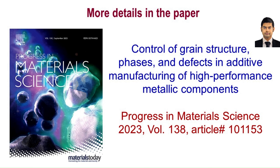More details on the control of microstructure can be found in the review paper, 'Control of Grain Structure, Phases, and Defects in Additive Manufacturing of High-Performance Metallic Components.' The paper can be downloaded from the Progress in Materials Science Journal's website or obtained by writing to the authors. The link to access the paper from the publisher's website can be found in the description of this video.